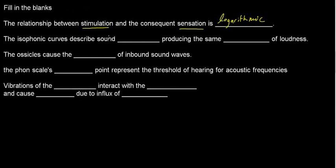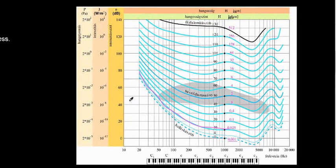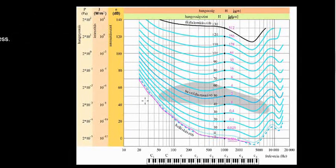The isophonic curves describe sound producing the same something of sound. The isophonic curves are these curves right here. So the isophonic curve for the zero-phon means that all the frequencies along this curve are going to have the same zero-phon, so they're all going to have the same loudness sensation.